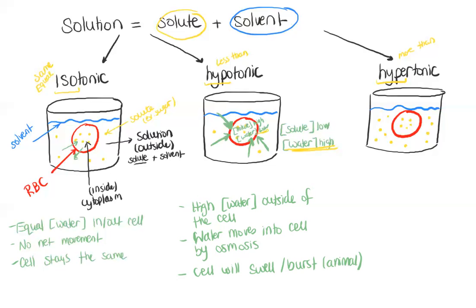Plant cells, however, will become turgid — they do not burst, because plant cells have the extra protection of the cell wall, which prevents them from exploding if they fill up with too much water.